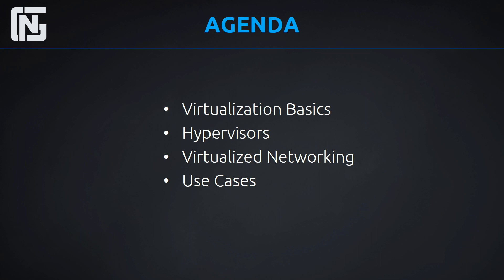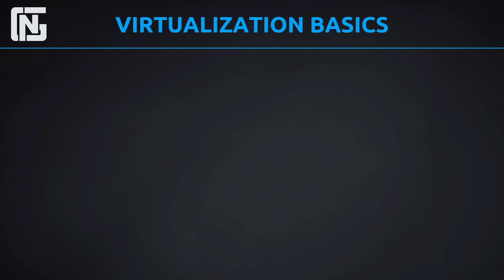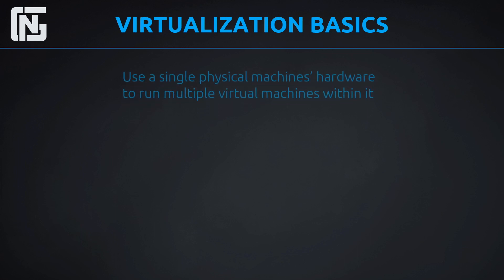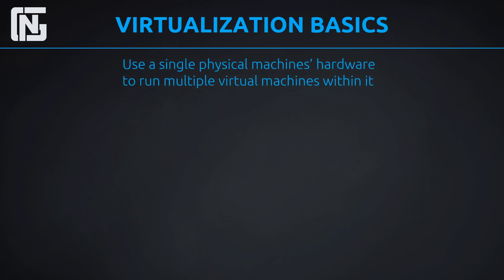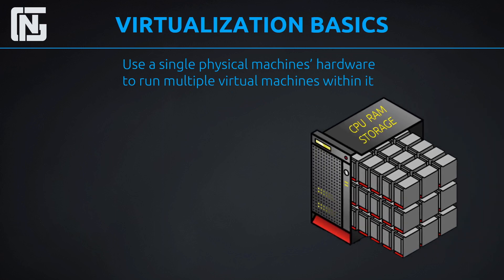The basic definition of virtualization is when we have a single physical machine and we run multiple virtual machines within it. These virtual machines are all using the hardware of that single machine — meaning we have one computer and we have many different computers inside of it. This could be multiple different types of Windows machines, etc., and they're all using the main machine's hardware.